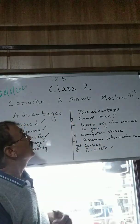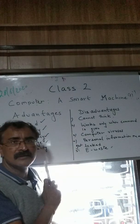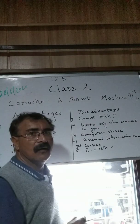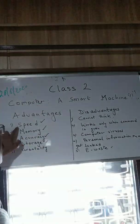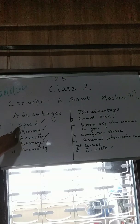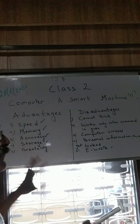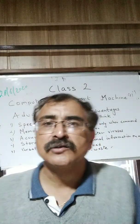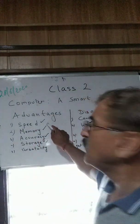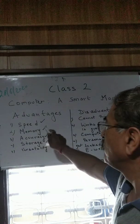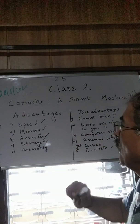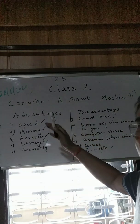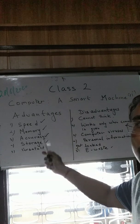Now there are certain advantages and disadvantages of a computer. The first advantage is speed — the computer works very fast. If I type a lengthy mathematical question, you get the answer in milliseconds and the answer will be correct. If I ask you to add two very big numbers, you may take time and your answer may be wrong.